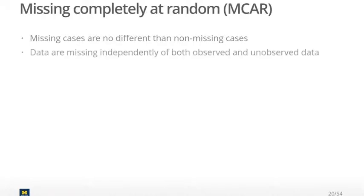Missing completely at random means that missing cases are effectively no different than non-missing cases, and that the underlying mechanism is truly random — it's completely random. Another way to think about this is that data are missing independently of both observed and unobserved data.